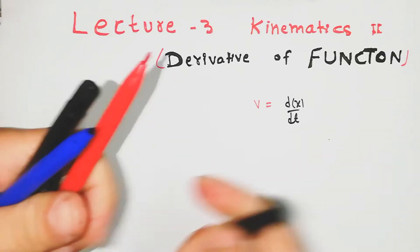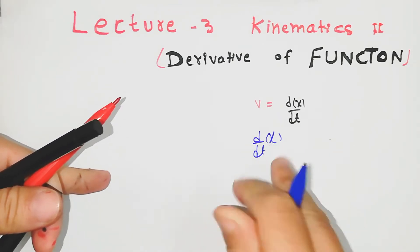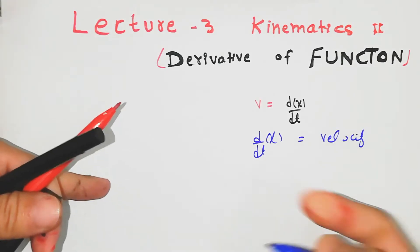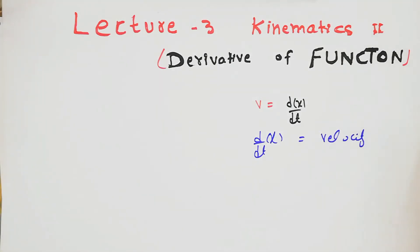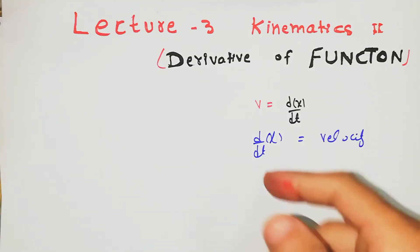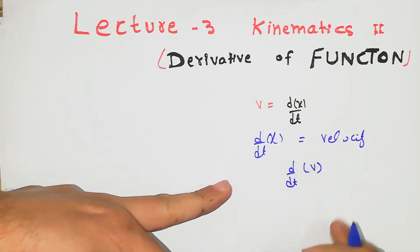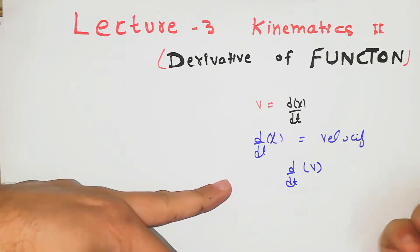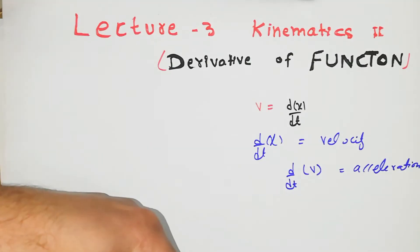Let's start this way: x is distance. When we have derivative function applied, then we have velocity. When we have derivative function applied again to the velocity v, what will I get? I will get the acceleration of the object.